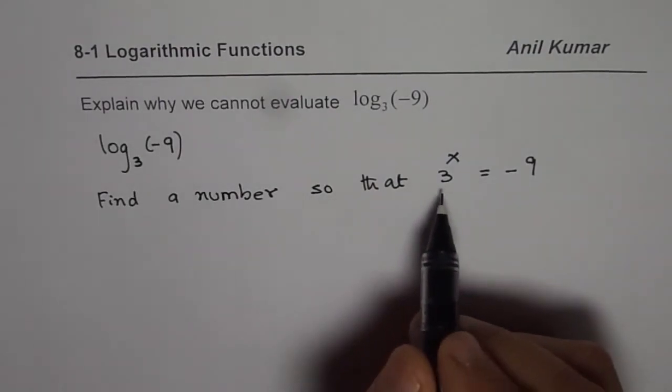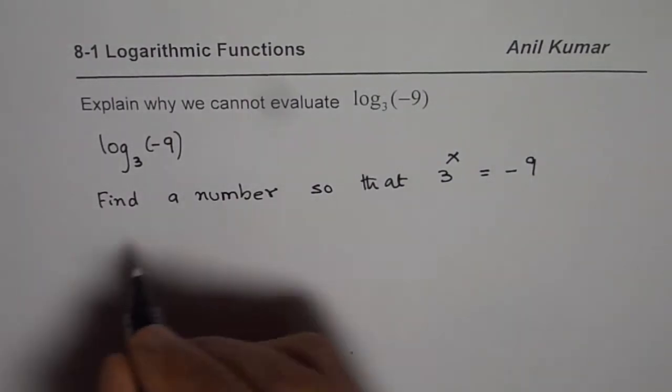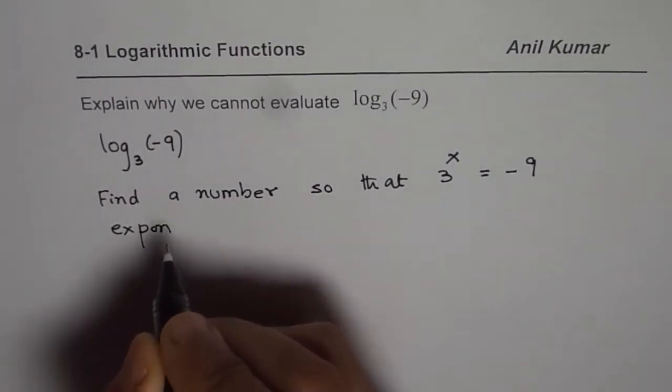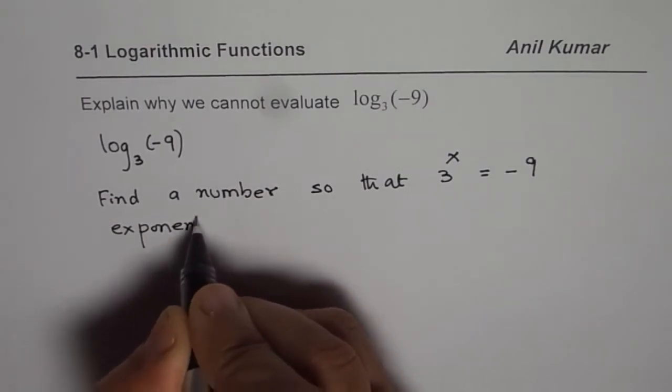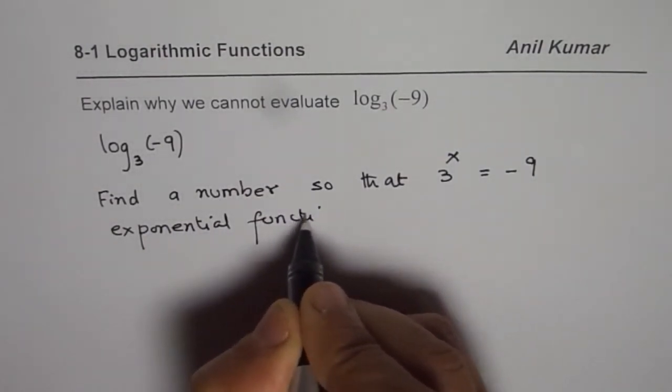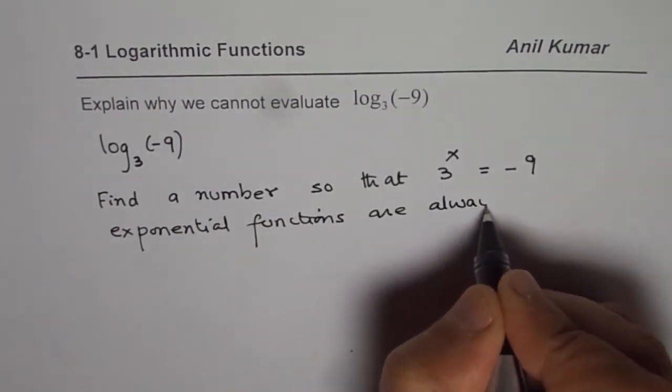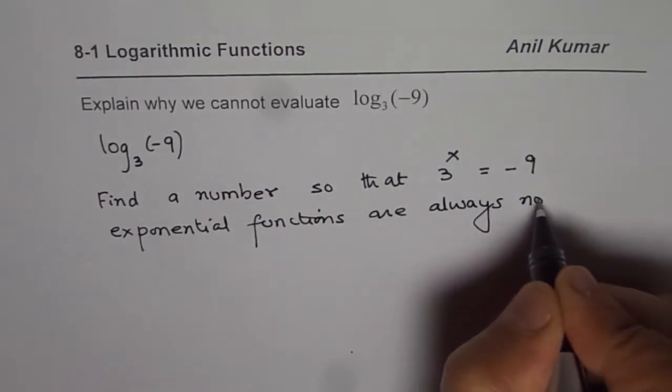Now, as you know, 3 to the power of anything can never be negative. So we know exponential functions are always non-negative.